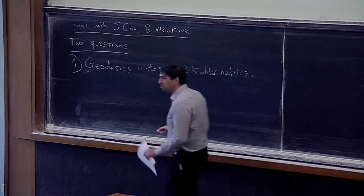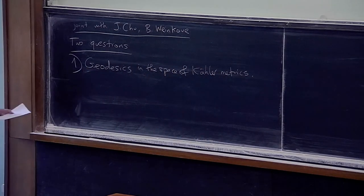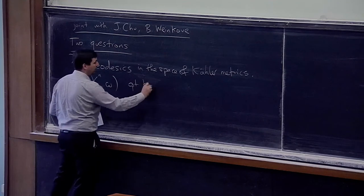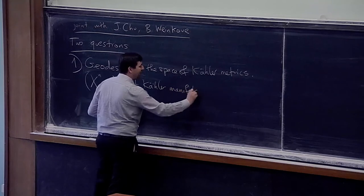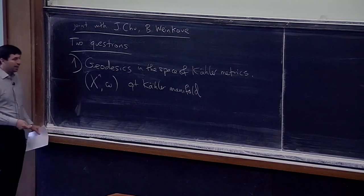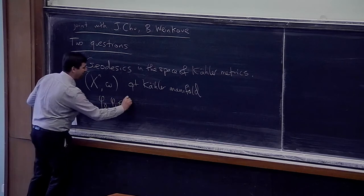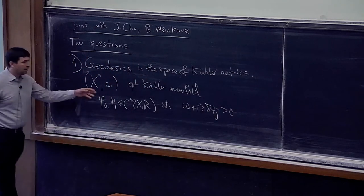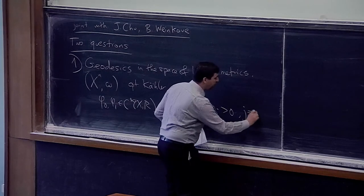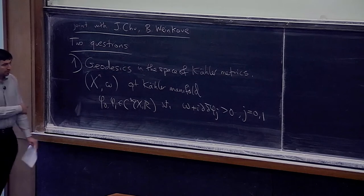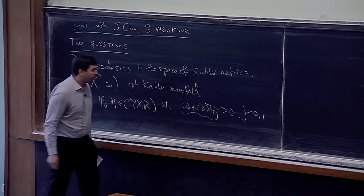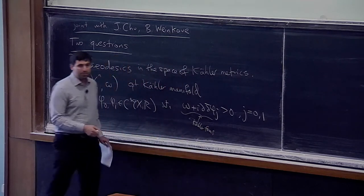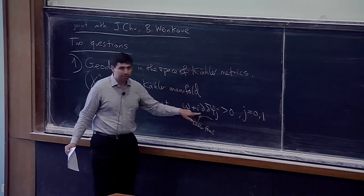This appeared briefly in Boo's talk, but let me explain the setup. X is an n-dimensional compact Kähler manifold without boundary — a closed manifold — and omega is the Kähler form. Suppose I have two smooth functions phi_0 and phi_1 such that omega plus dd-bar of phi_i is still a strictly positive definite Kähler form. By the dd-bar lemma, this is the same as picking two Kähler metrics in the same cohomology class as omega.